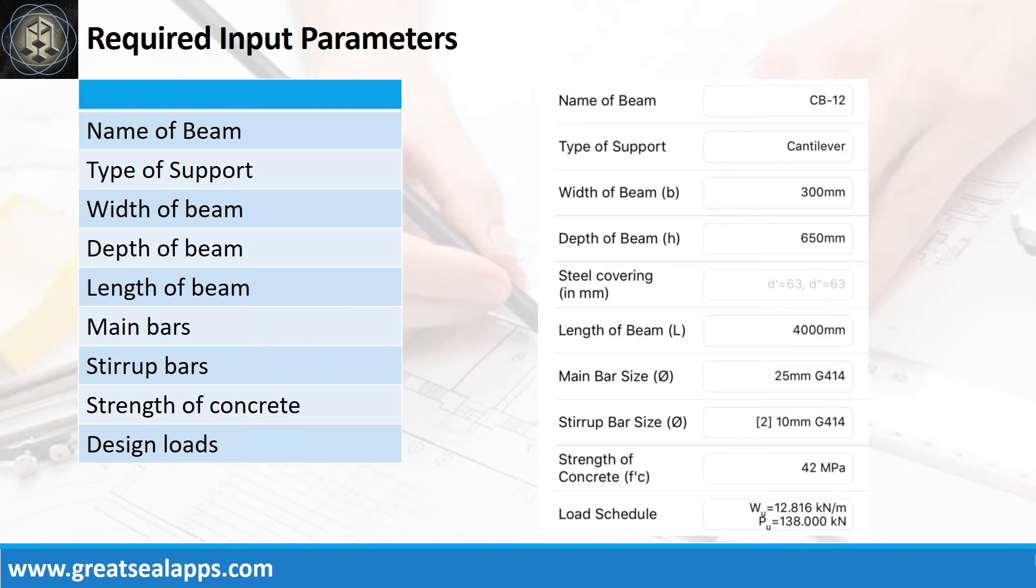Enumerate input parameters required. Name of beam: CB12, Type of support: cantilever, Width of beam: 300 mm, Depth of beam: 650 mm, Length of beam: 4000 mm.